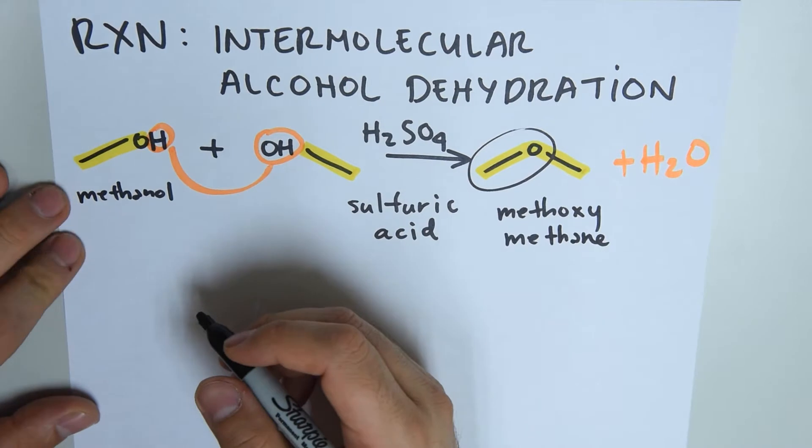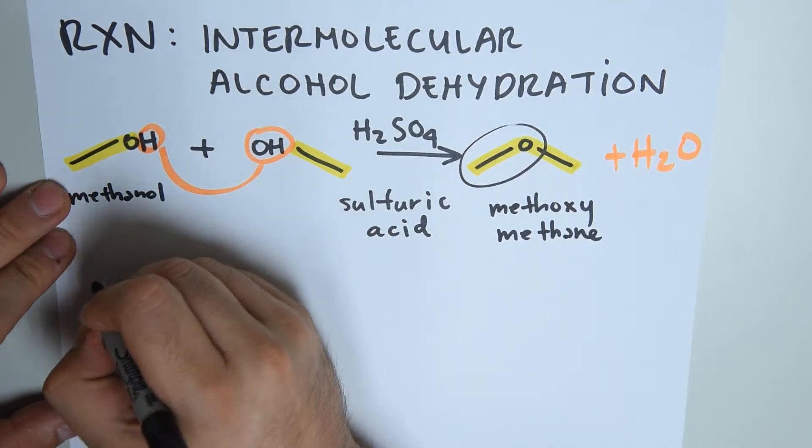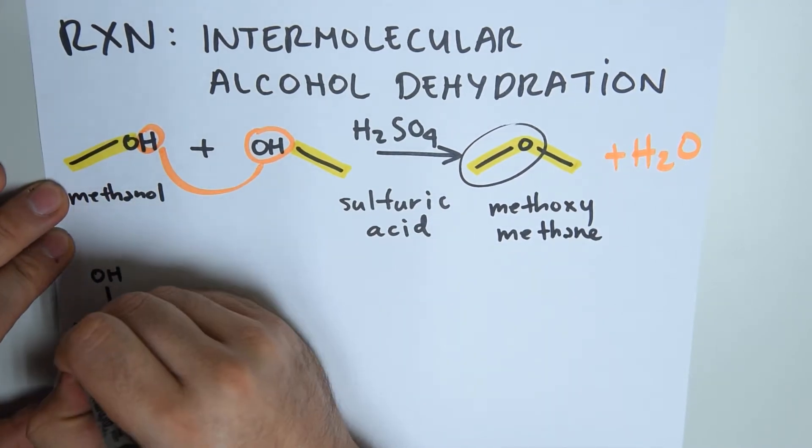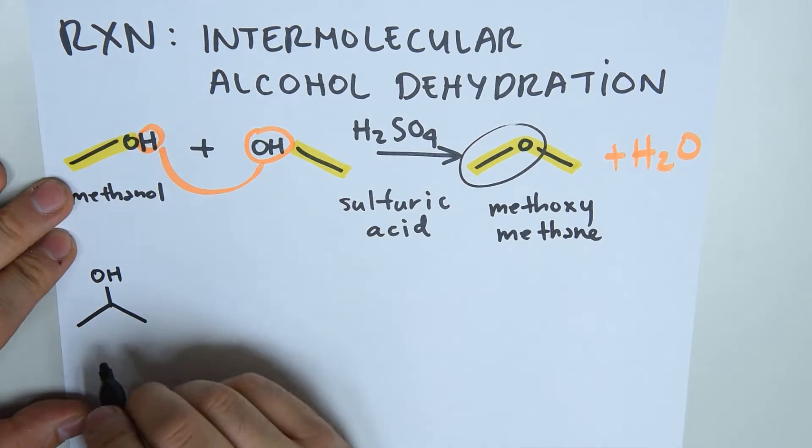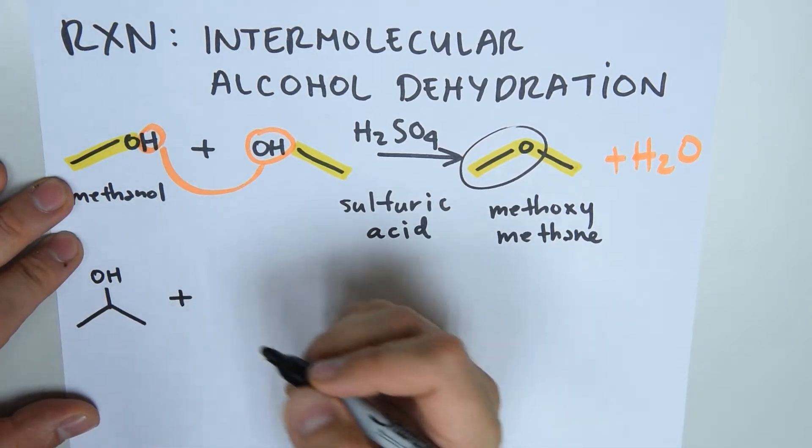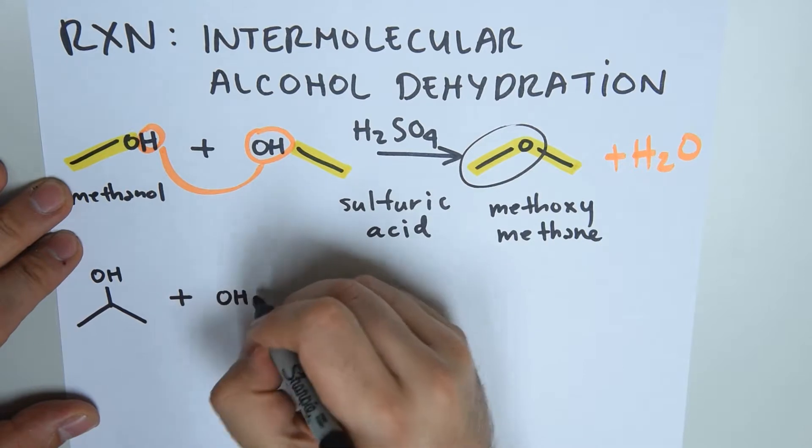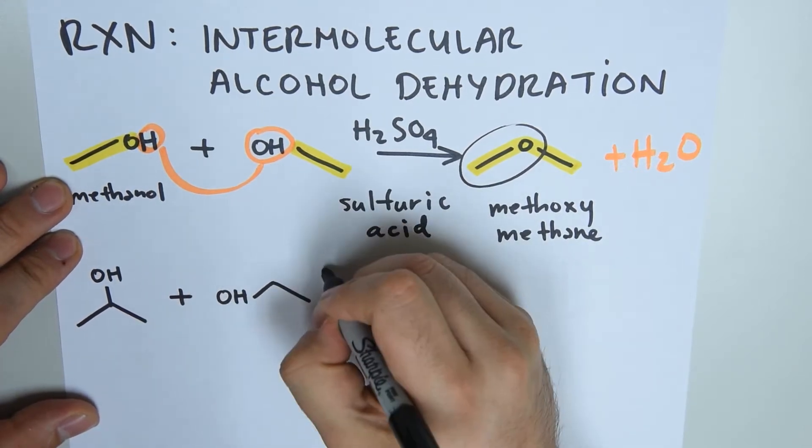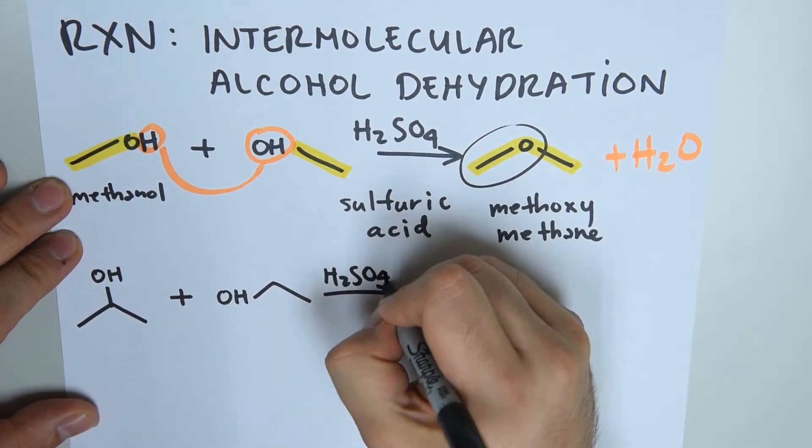Let's try another example. We start with 2-propanol, which is also called isopropyl alcohol, and we make it react with ethanol. We use sulfuric acid to make the reaction occur.